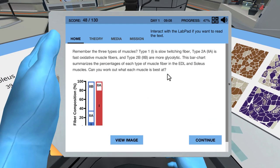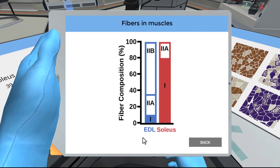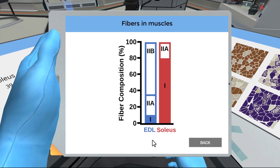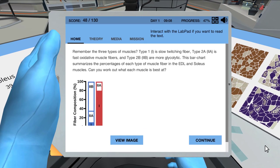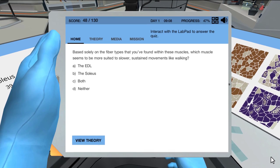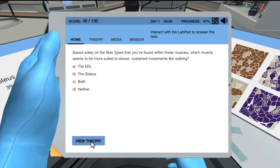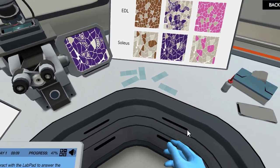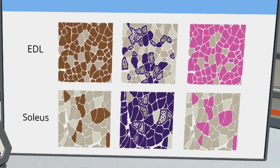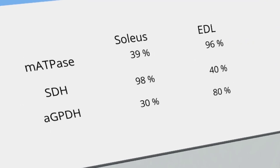Remember the three types of muscles? Type 1 is slow twitching fiber, type 2A is fast oxidative muscle fibers, and type 2B are more glycolytic. This bar chart summarizes the percentages of each type of muscle fiber in the EDL and soleus muscles. Can you work out what each muscle is best at? Based solely on the fiber types that you've found within these muscles, which muscle seems to be more suited to slower, sustained movements like walking? That's it. The soleus stains strongly using the SDH staining, meaning it's filled with mitochondria, which are used for aerobic work. The EDL, on the other hand, is great for anaerobic and fast movements, like sprinting.